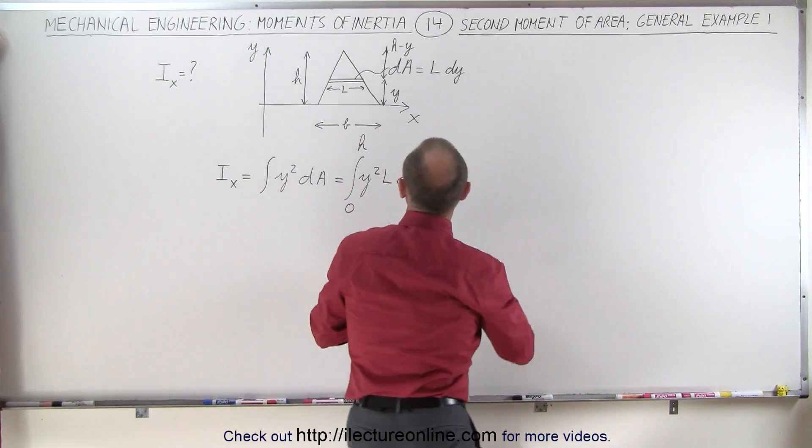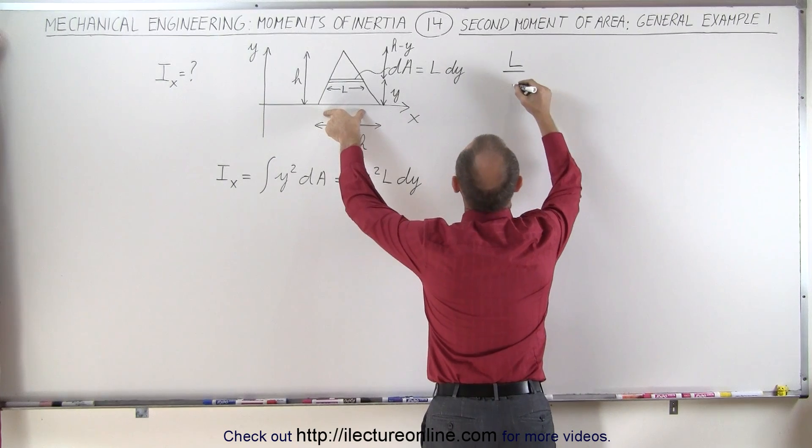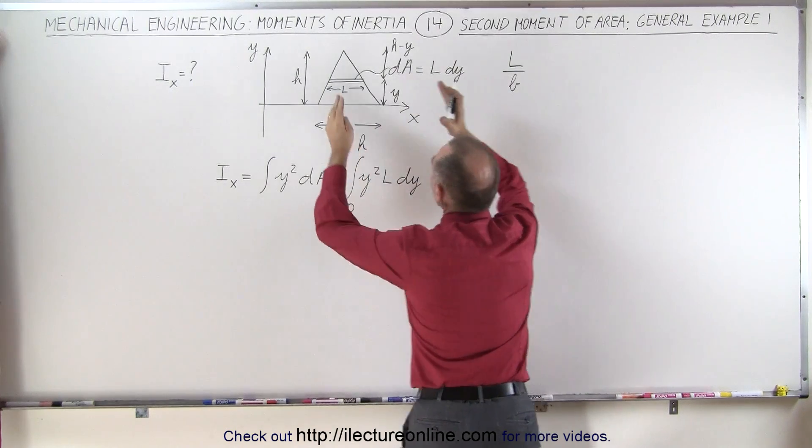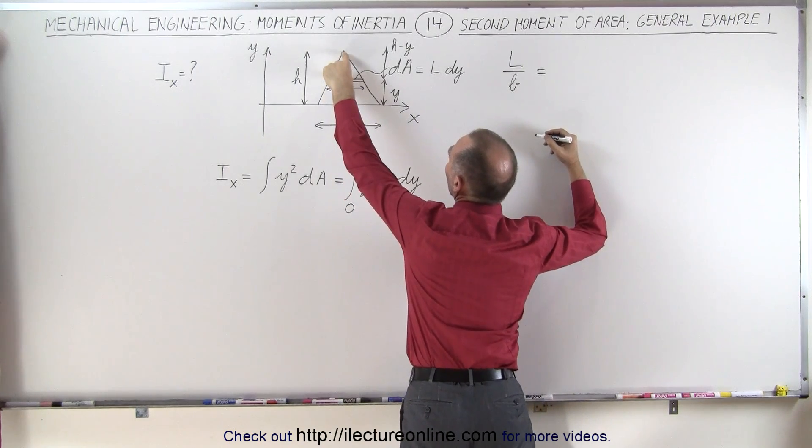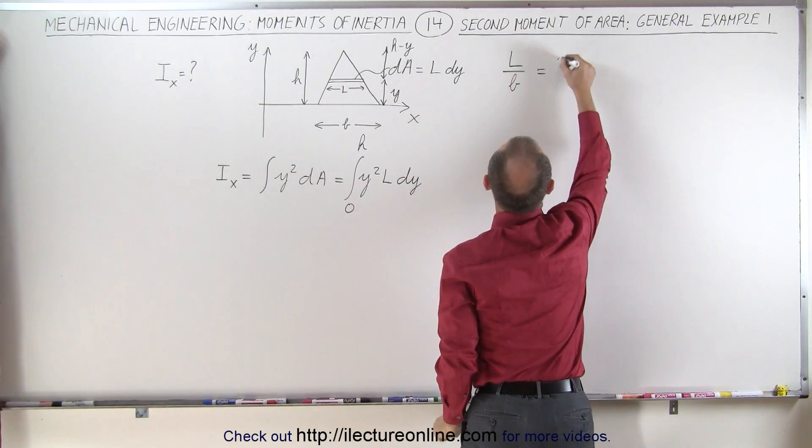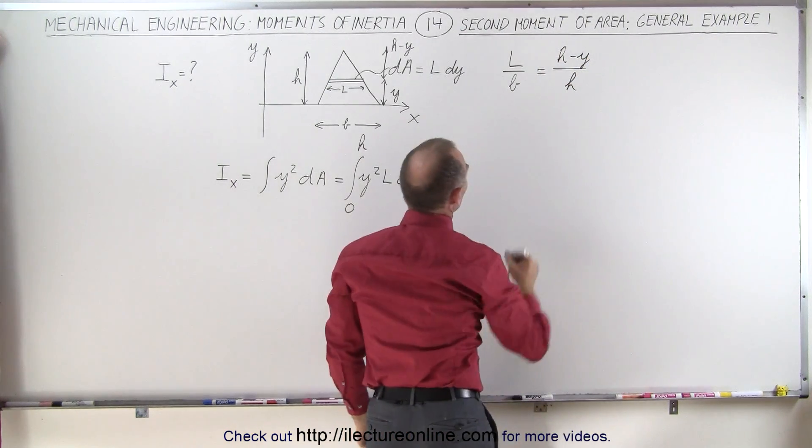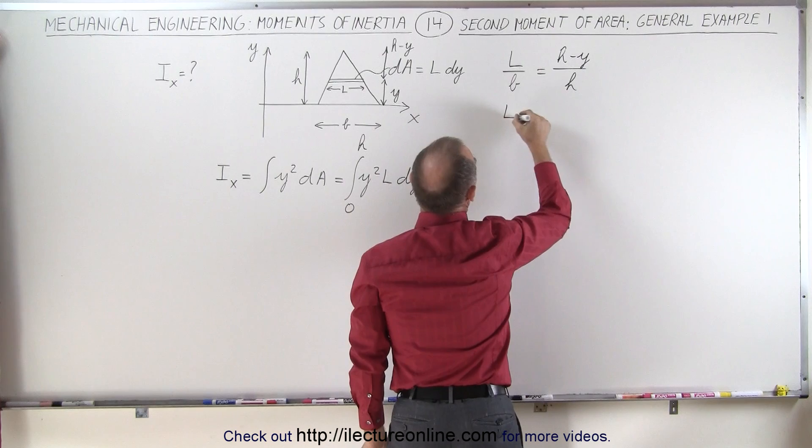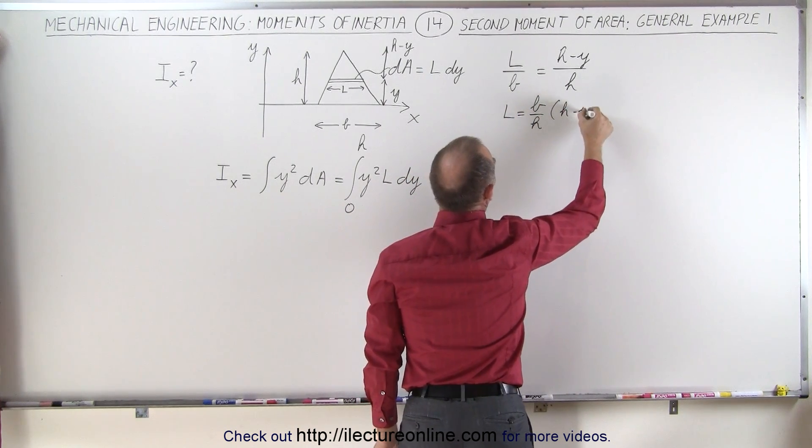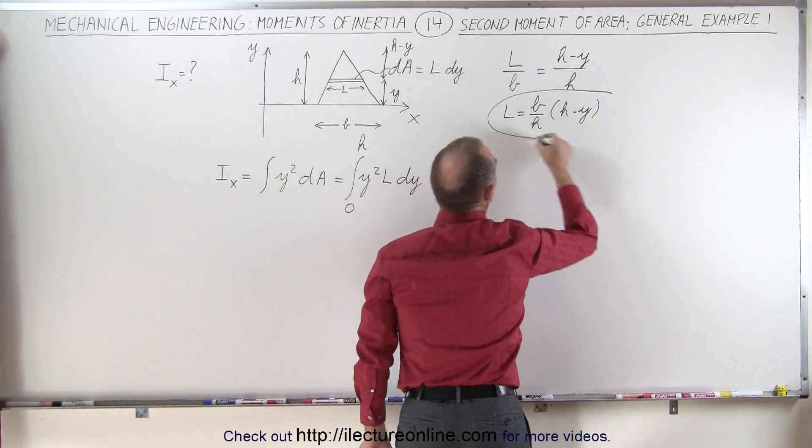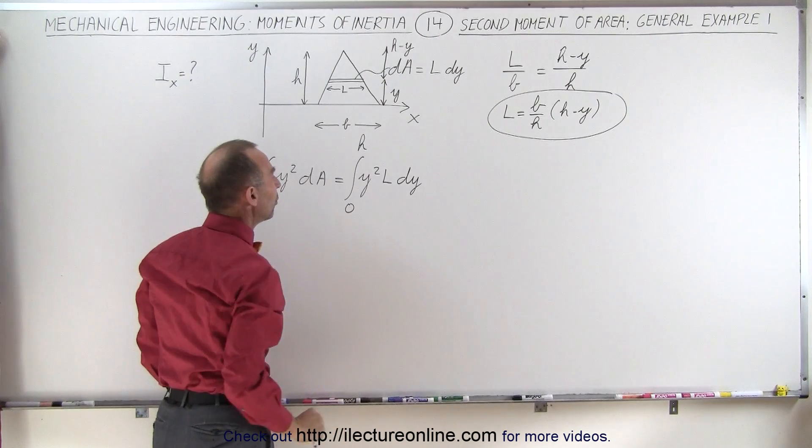And let's see how we can do that. We can do a relationship. We can say that L divided by L with respect to the base, so the ratio of the length to the base, is going to be equal to the ratio of this height to the full height, which would be h minus y divided by h. In other words, L can be written as b divided by h times the quantity h minus y, and now we have L in terms of y, which is what we want, because we have the differential dy.